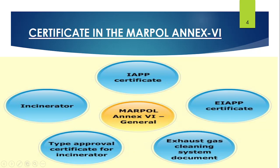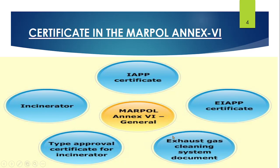The important certificates under MARPOL Annex 6 are: the IAPP Certificate, given when a ship complies with Annex 6 regulations, retained on board and renewed on a 5-yearly basis; the EIAPP Certificate (Engine International Air Pollution Prevention Certificate), given when the engine complies with Annex 6 SOx and NOx emission regulations; the Type Approval Certificate, given when the incinerator complies with Annex 6 emission rules; and the Exhaust Gas Cleaning System certificate if such a system is fitted on board.